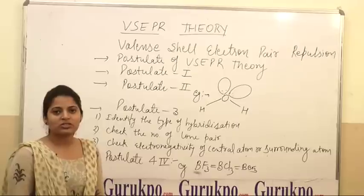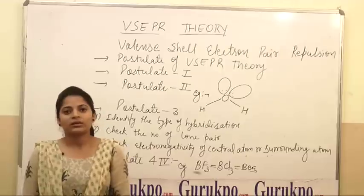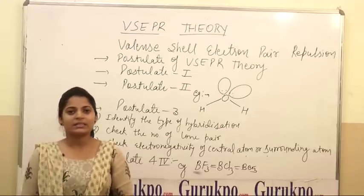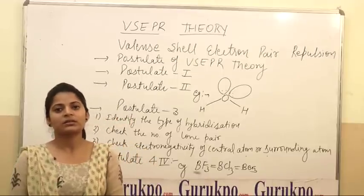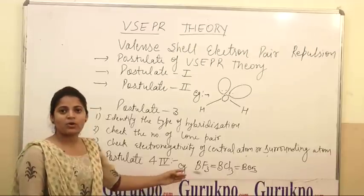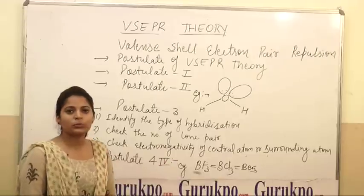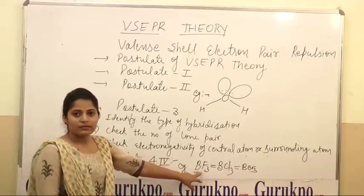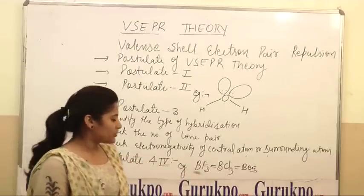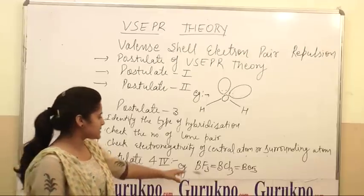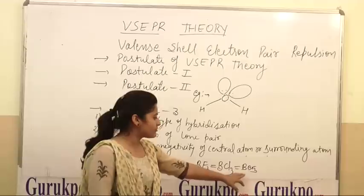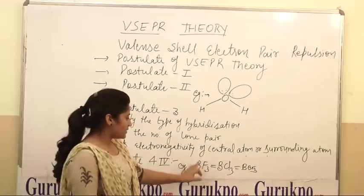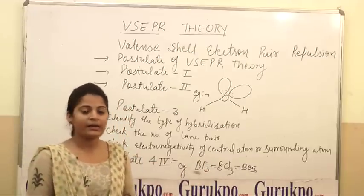Postulate 4: if all the electron pairs around the central atom are bond pairs and all the surrounding atoms are identical, then electronegativity never affects the bond angle, and we can say that this molecule is ideal. For example, BF3 = BCl3 = BBr3. In these three, there is no lone pair present — only bond pairs — and the surrounding atoms around the central atom are identical. So we can say that these are ideal.